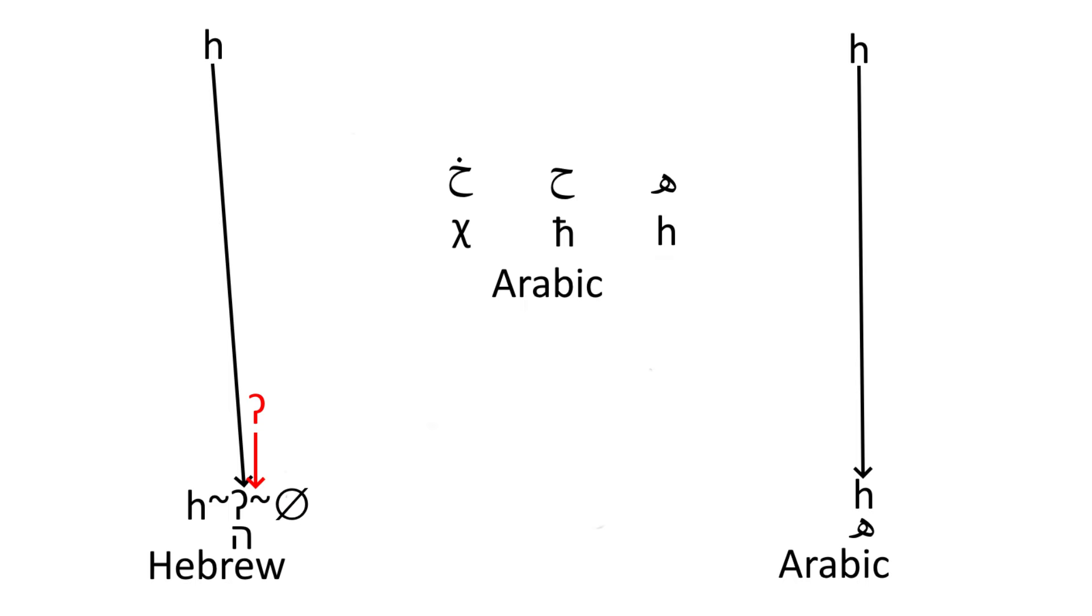Thus Arabic still has a three-way distinction between ḥ, ḫ, and h, while Hebrew has ḫ, and now the h is practically gone as well.